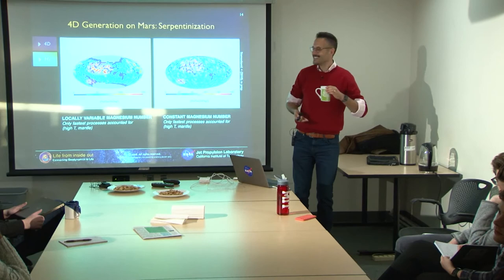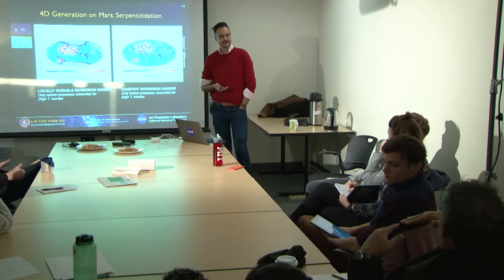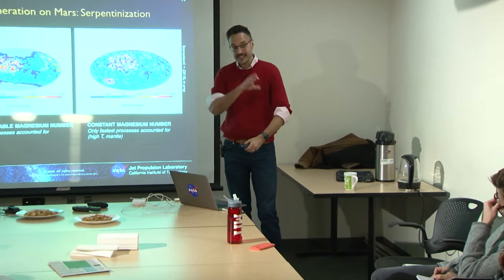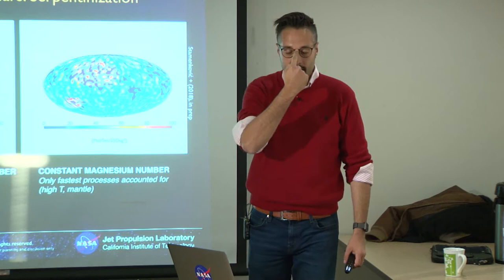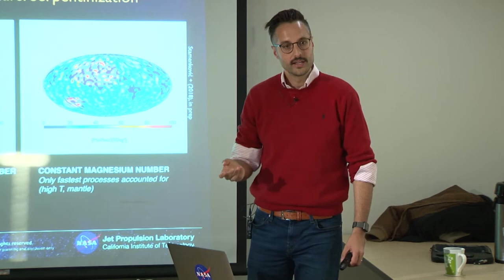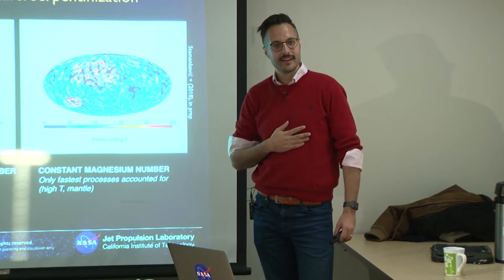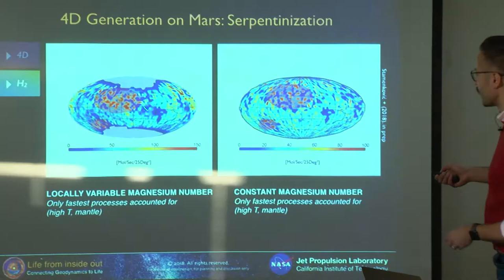Audience question: So the red places are where H2 production is likely? Yes, exactly. Another question: Where does this fall within Mars' planetary evolution timeline? This is a snapshot of today — geologically speaking. That's a very good question, because one of the big uncertainties is how the lithosphere evolved, since it's a big modulation of heat flow. We have strong indication that the biggest crust formation was in the first 500 million years, then it kind of stagnated — with later large volcano formation like Tharsis — but we include those as uncertainties.